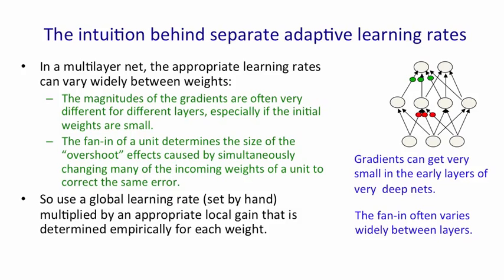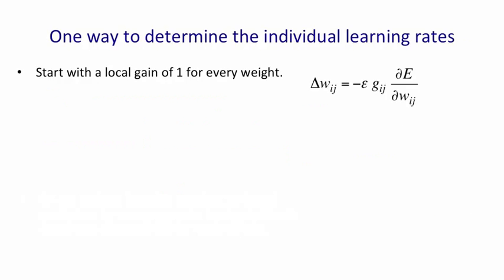The idea is that we're going to use a global learning rate, which we set by hand, and then multiply it by a local gain that's determined empirically for each weight. A simple way to determine what those local gains should be is to start with a local gain of 1 for every weight, so that initially we're going to change the weight w_ij by the learning rate times the gain of 1, g_ij, times the error derivative for that weight.